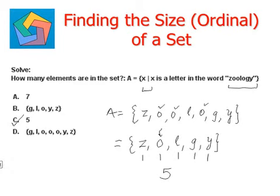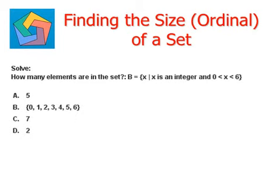Let's look at another example. How many elements are in the set B, such that B is defined as the set of all x, and x is an integer that satisfies a given inequality. Now, x is greater than 0 and less than 6.